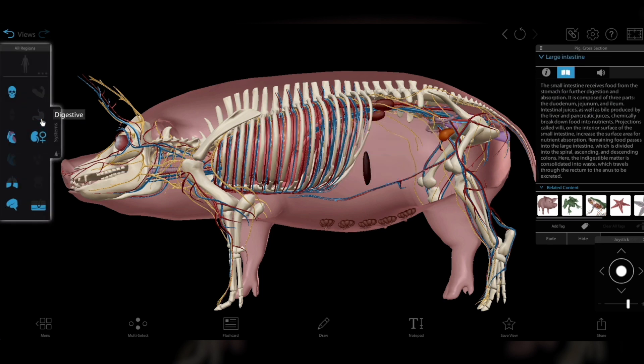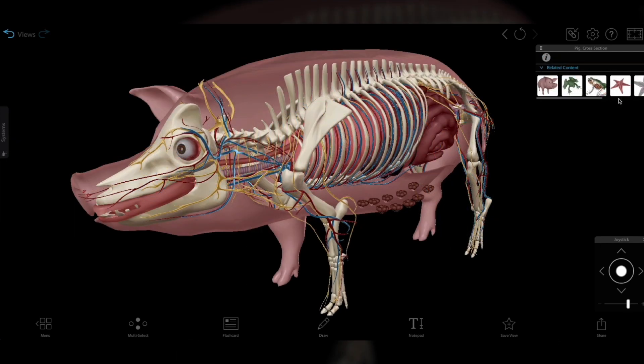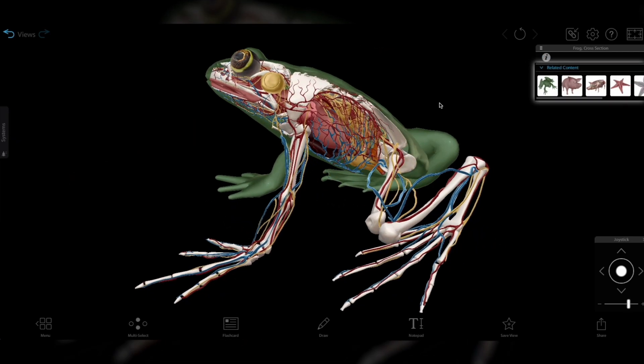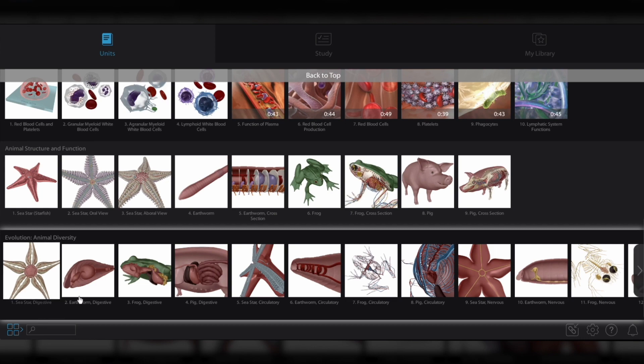Add and remove whole body systems with the systems tray. Easily compare structures and systems across species with the related content box and the Evolution Animal Diversity Unit.